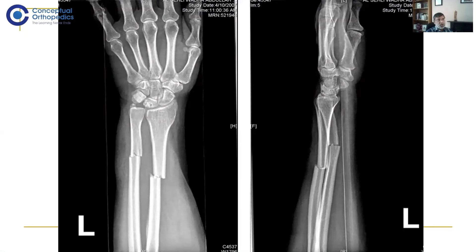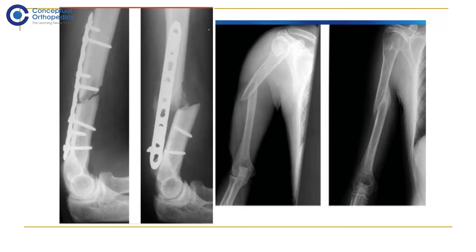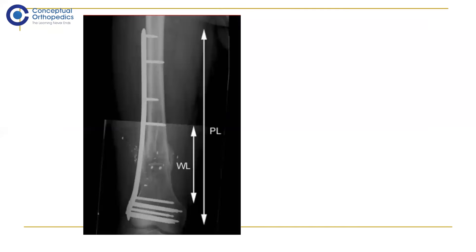Similarly, you may ask why some fractures are not suited to nailing even though most diaphysial fractures are managed with nails, and what implant is best instead. We also need to recognize that a half-hearted understanding of fixation principles can do more damage than good — some fractures would have been better left in a simple collar-and-cuff sling than fixed with inappropriate fixation that will never unite and causes more complications.